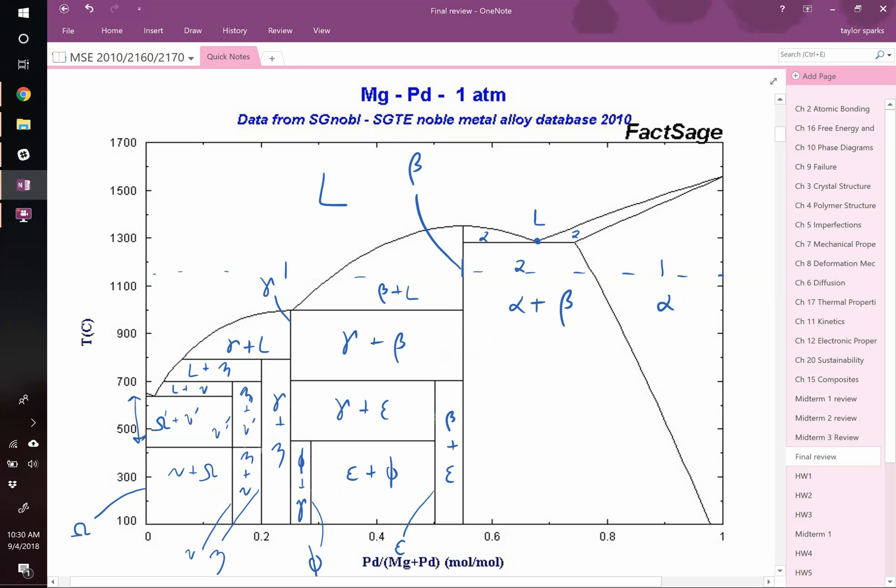If your one, two, one, two rule ever doesn't work, that means that you misdiagnosed a line compound. You either called one a line compound that wasn't, or you forgot to label one.